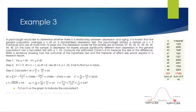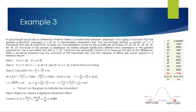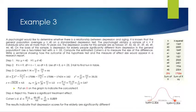Put an x on the graph. The decision for step four is to reject the null — there is a significant treatment effect. So calculate Cohen's d: m minus mu over s gives 44 minus 40 over 4.5 equals 0.889. The results indicate that depression scores for the elderly are significantly different from scores for the general population: t(8) equals 2.67, p less than 0.05, d equals 0.889.